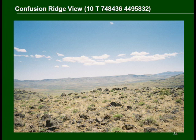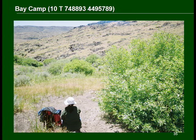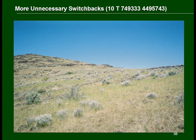A nice scenic point is provided by the Stepwise Arc Hiker's tendency to run about confused on ridges — the point for which this ridge is named. Bay Camp is a reasonable campsite near a spring and some bay trees. More unnecessary switchbacks are an artifact of the Stepwise Arc Hiker algorithm. The ridge they are on looks rather severe from atop Confusion Ridge and from Bay Camp, but other than some awkward volcanic scree is no worse than any other place along the trail.